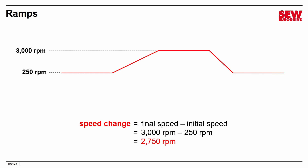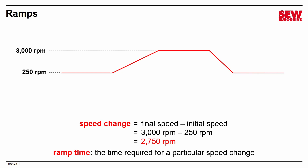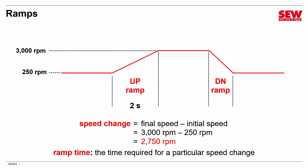Ramps also take time — those speeds don't happen instantly. We're dealing with things that may weigh vast amounts; you can't accelerate or decelerate them on a dime, it could take seconds or even longer with something really massive. In our example, we have an up ramp and a down ramp. The up ramp took maybe two seconds, the down ramp only one. So all the information we need to define a ramp is the speed change and how much time it took.